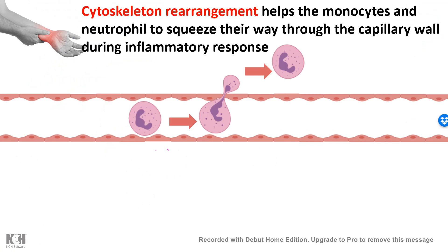Imagine a situation of inflammation, where neutrophils and monocytes need to squeeze themselves out of the blood vessel and reach the place of inflammation. In that case, squeezing through the narrow capillary endothelia is only possible because the cytoskeletal elements inside these blood cells can be rearranged, allowing them to squeeze through. You can appreciate that microtubule dynamics is super important at several aspects of general physiology and normal cell biology.